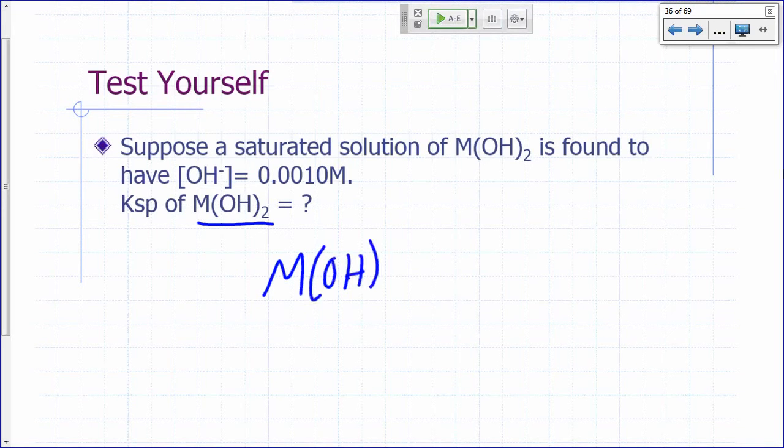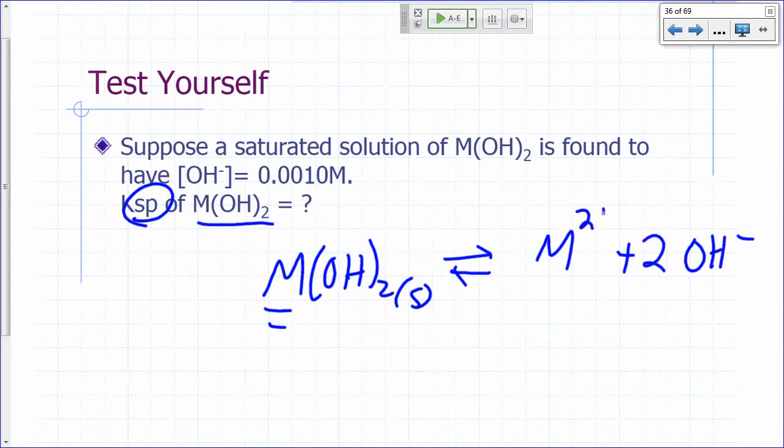So M(OH)₂ must be a solid, right? Since we're talking about its Ksp. What would be the products for this? Two hydroxides, obviously. So what must be the charge of your M? Plus 2.